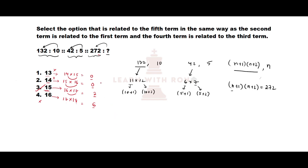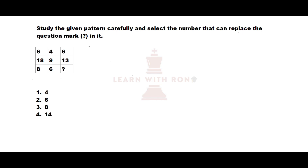Next question: we need to find the value in place of the question mark. Looking at the first row: 6, 4, and 6. The difference between the first two numbers is 6 minus 4 = 2. Adding 4 to this difference gives 6, which is the third number.